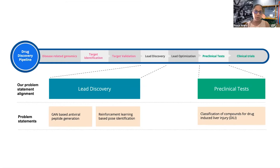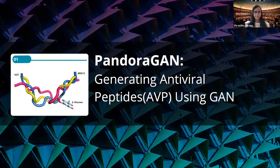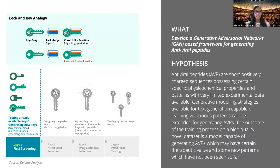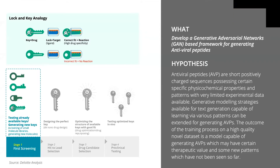We will discuss three projects done as part of the drug discovery hackathon. The first is Pandora GAN — our model that generates antiviral peptides using a GAN, which is a Generative Adversarial Network. In this problem statement, we are trying to generate keys. GANs are well known in the context of deep fakes, creating fake images and texts; we are applying the same methodology to generate antiviral peptide sequences.